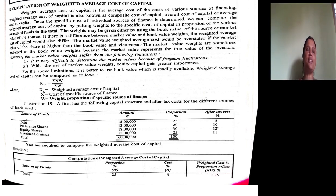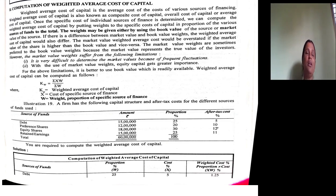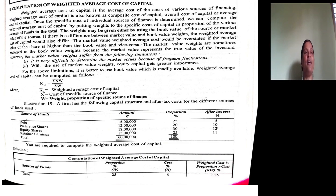In the last few sessions, we discussed three important costs of capital: preference capital, debt capital, and equity capital. We calculated the cost of each of these sources. When we calculate the cost of each and every specific source of capital, what we calculated is the specific cost of capital. When we consider the cost of various sources of financing together and calculate the average cost of all these sources put together, what we get is the weighted average cost of capital.